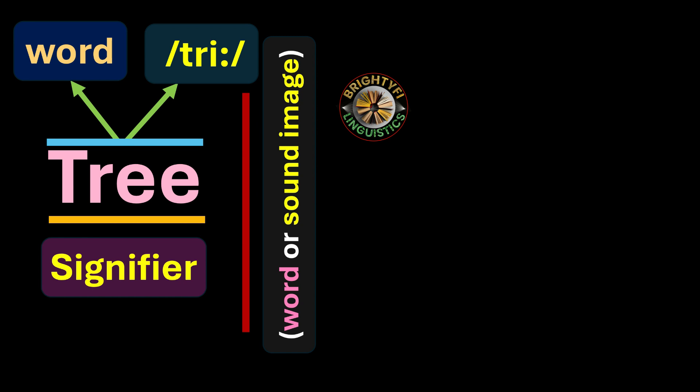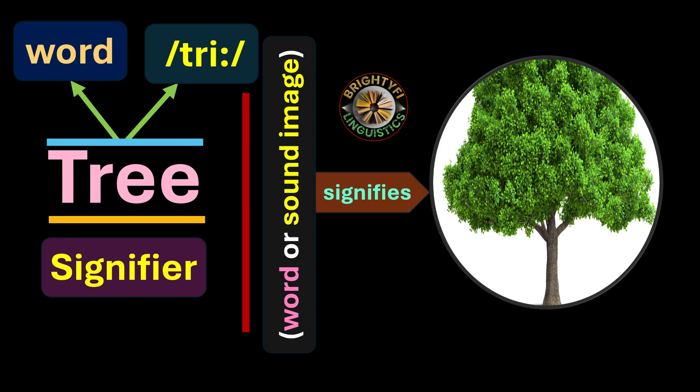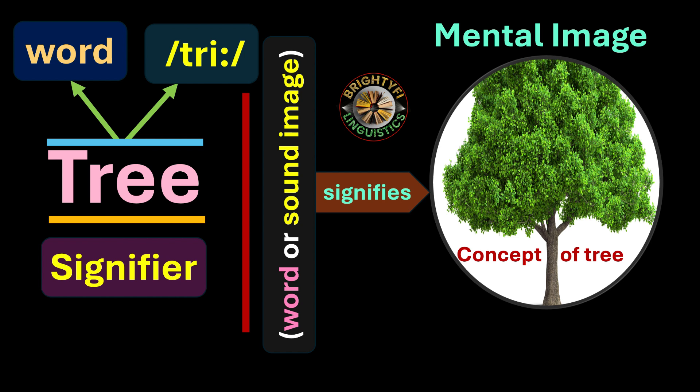So the word 'tree,' which is the signifier — what does it mean? What does it bring to your mind? What does it signify? It signifies a picture in your mind — the picture of a tree. In other words, the concept of tree, the mental image of the tree, comes to your mind. That is what we call the mental image, and this is known as the signified. So the signifier refers to the written form or the spoken form of the word, which signifies the mental image, technically known as the signified.